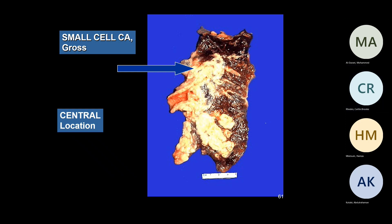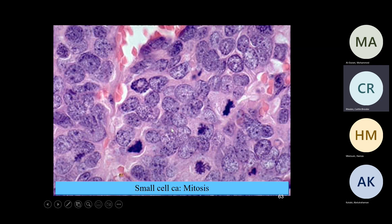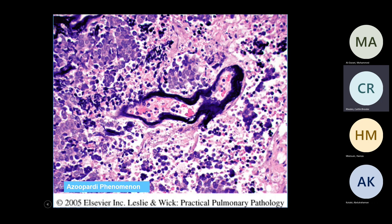This is what a small cell carcinoma looks like — all these elongated blue processes are nuclear processes that are crushed. Molding: one nucleus hugging another nucleus. The chromatin is granular, salt-and-pepper. This is one high-power field — look at how many mitotic figures. There are five in one field. So if there are more than 10 in 10 fields, it's small cell carcinoma — clearly in one field there are five. This is classic. The Azzopardi phenomenon: DNA material lining the vessels. In this slide you can also see a lot of necrosis in the background.